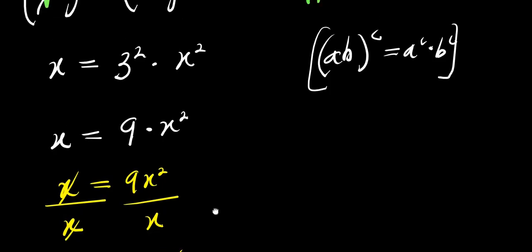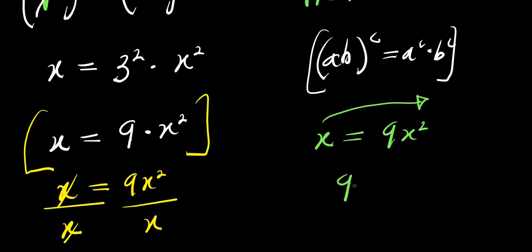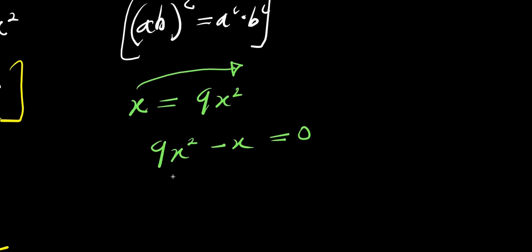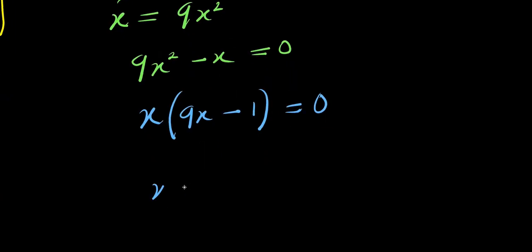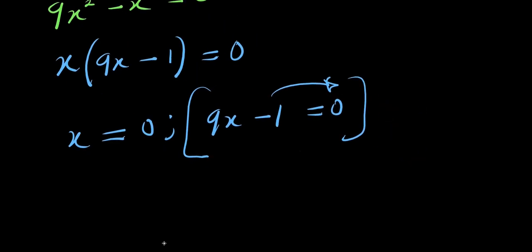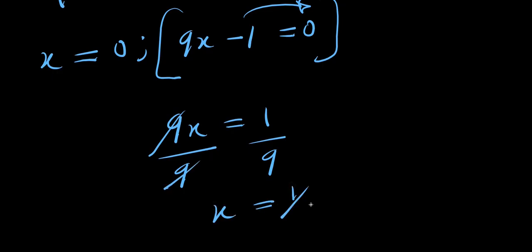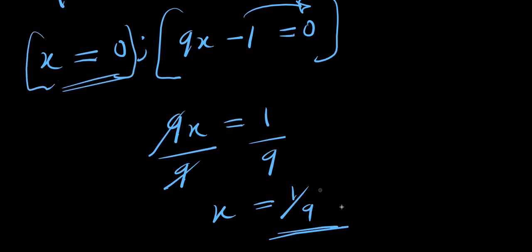That gives us one solution. We can also approach this by moving terms over: x equals 9x squared becomes 9x squared minus x equals 0. Factoring out x gives x times (9x minus 1) equals 0. So either x equals 0, or 9x minus 1 equals 0. Solving the second equation: 9x equals 1, divide by 9, so x equals 1 over 9. This gives us two values: x equals 0 and x equals 1 over 9.